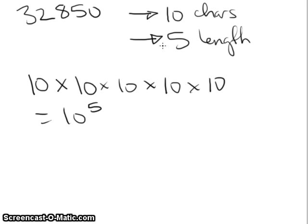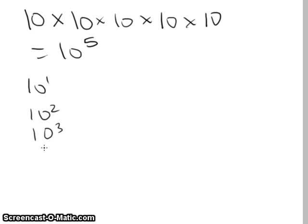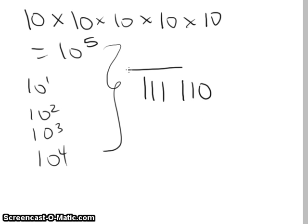But of course, they would guess all of the shorter passwords before that. That would be 10 to the 1, 10 squared, 10 cubed, and 10 to the power 4. Adding all of these up gives us the total that we're looking for. If they've guessed all the passwords up to and including ours that include just digits, that's 111,110. So that's the password search space, that's how many passwords they would have to try.